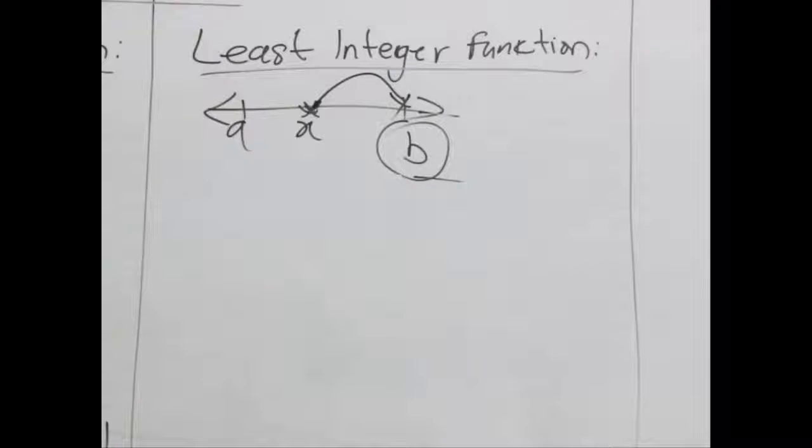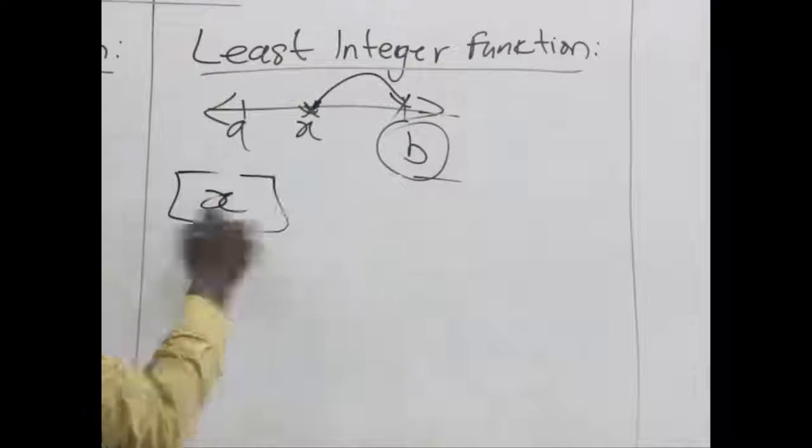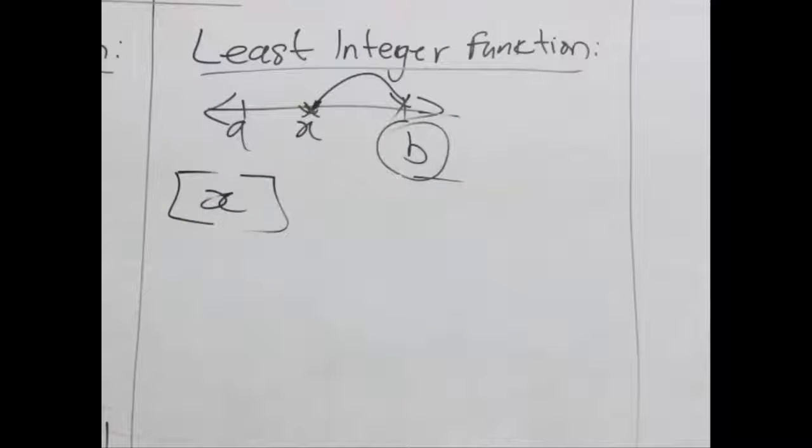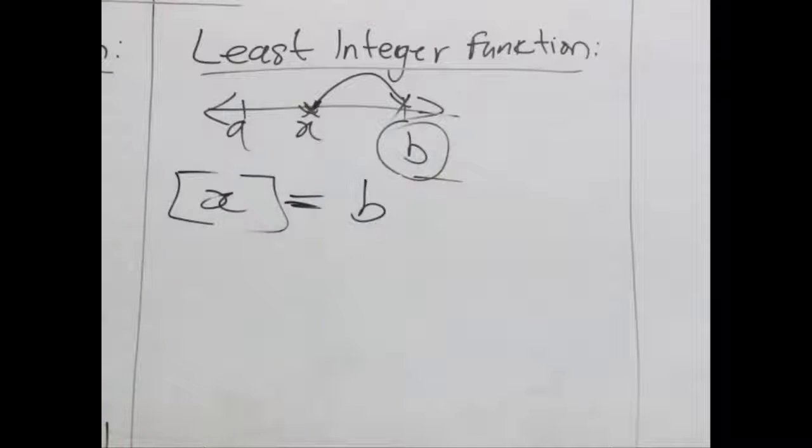So, let's take some examples and denote it by x in a square bracket. x in a square bracket will be equal to b when we represent it on a number line.